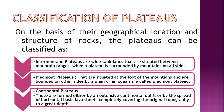First are inter-mountain plateaus — wide table lands situated between mountain ranges, surrounded by mountains on all sides. Second are piedmont plateaus, situated at the foothills of mountains and bounded on other sides by a plain or ocean.